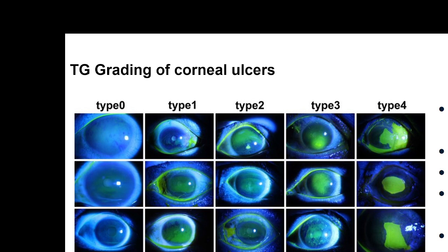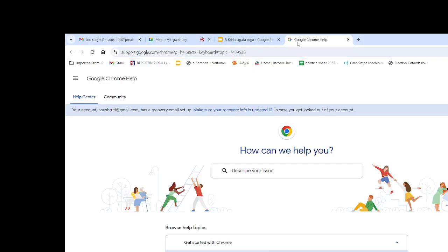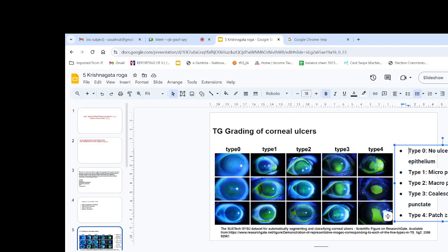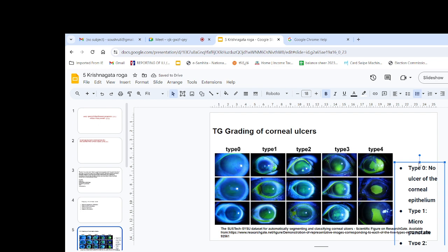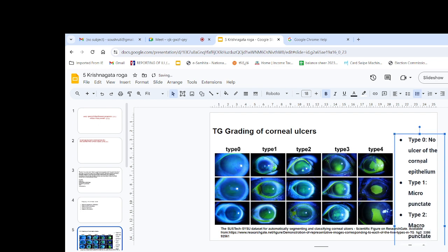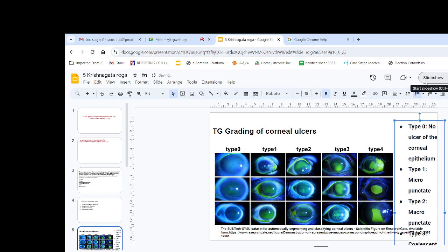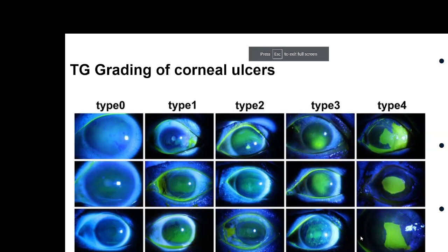Grading of ulcers is also done based on slit lamp observations. They are categorized into Type 1, Type 2, Type 3, and Type 4 based on size and appearance. Type 1 is micropunctate ulcer. Type 2 is macropunctate ulcer. Type 3 is deep ulcer formation.